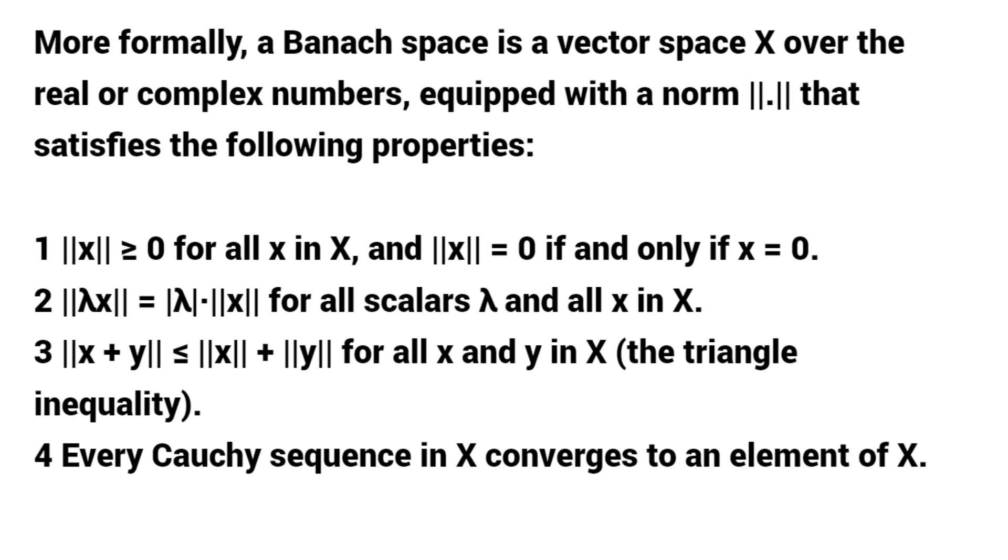1. ||x|| ≥ 0 for all x in X, and ||x|| = 0 if and only if x = 0.